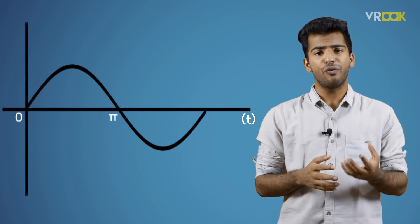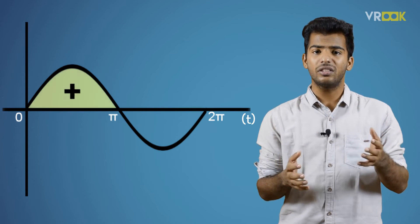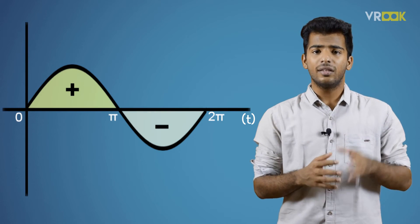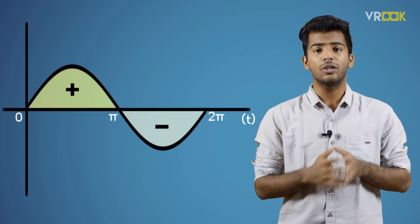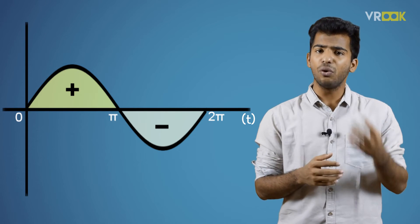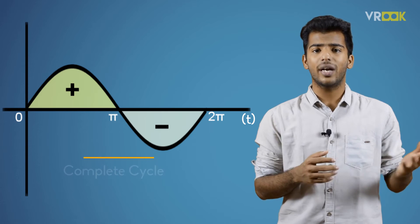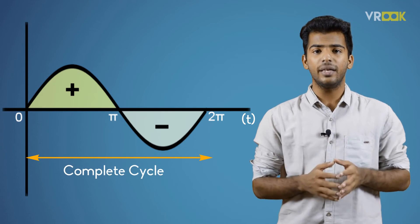The next important value is the average value of alternating quantity. The average value is the average of alternating current or voltage. A sinusoidal wave has two halves, positive and negative. They are identical but have opposite values. If you consider the average over a complete cycle, it will be zero.